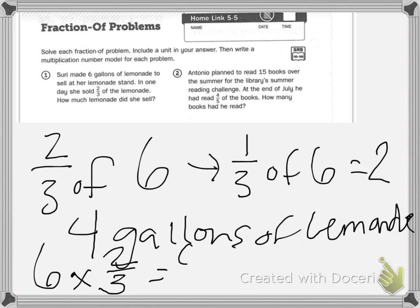We know if we put this over, two times six is twelve. Twelve divided by three is four, and that's how we get our answer.